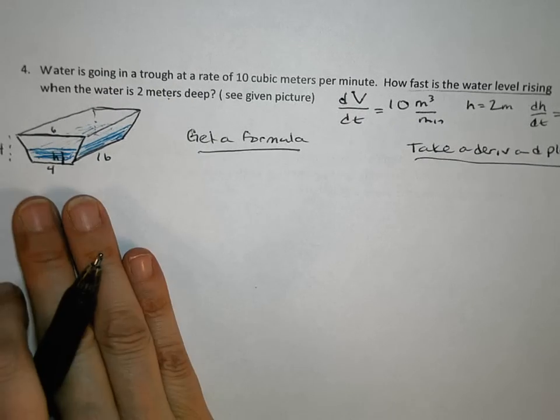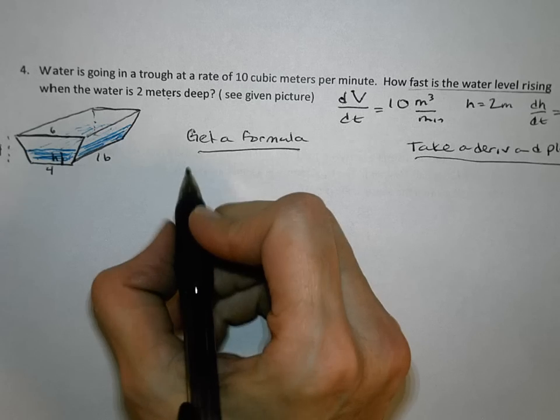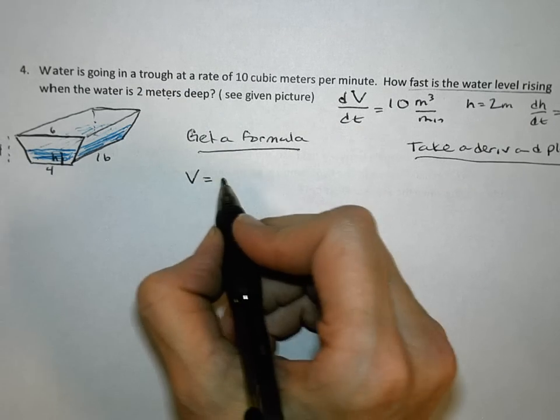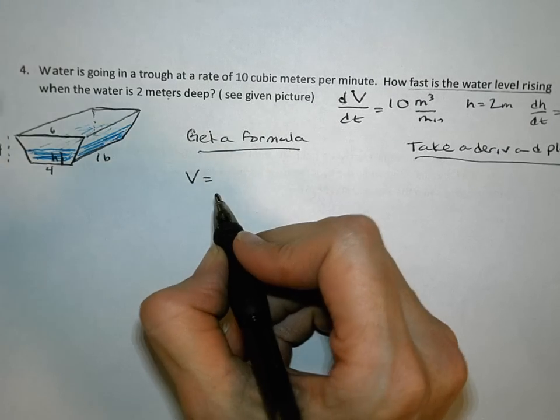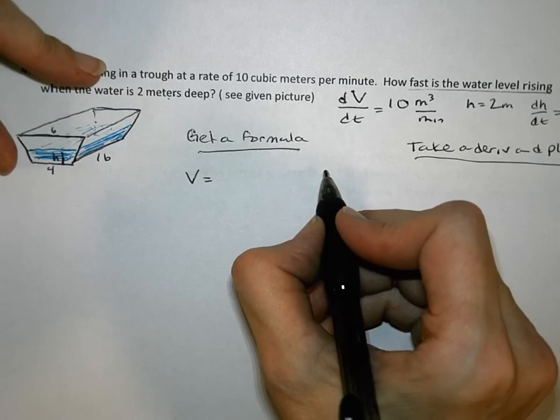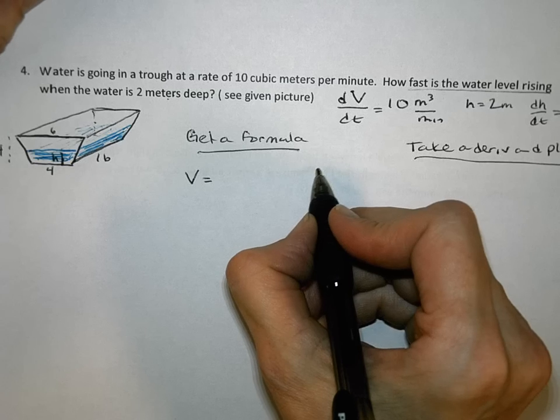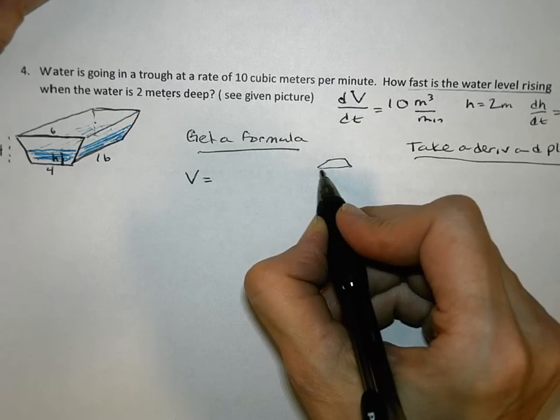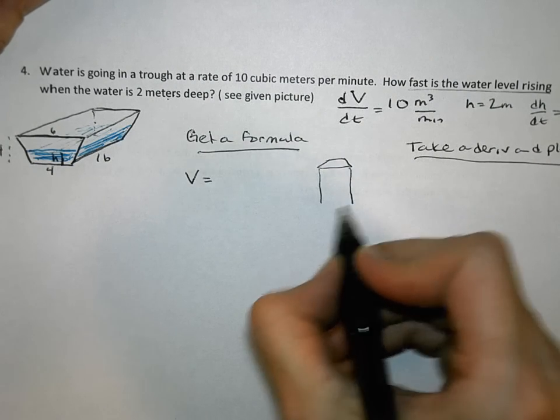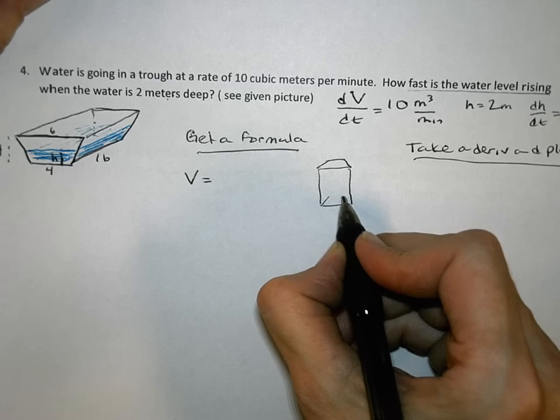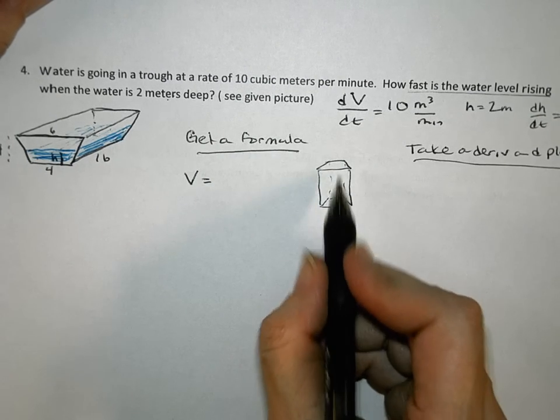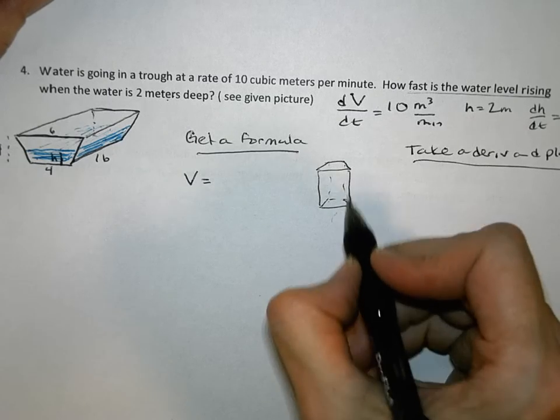So first we need to think about the volume of this shape and just what kind of shape that even is. It's not a sphere, it's not a cylinder. In general, in geometry, we call a shape like this a prism. In your geometry book, they usually stood them up on end, so it would have looked something like this, just so you can relate to how you saw it before. And they called that a prism. Okay, and that's actually what it is, a prism.